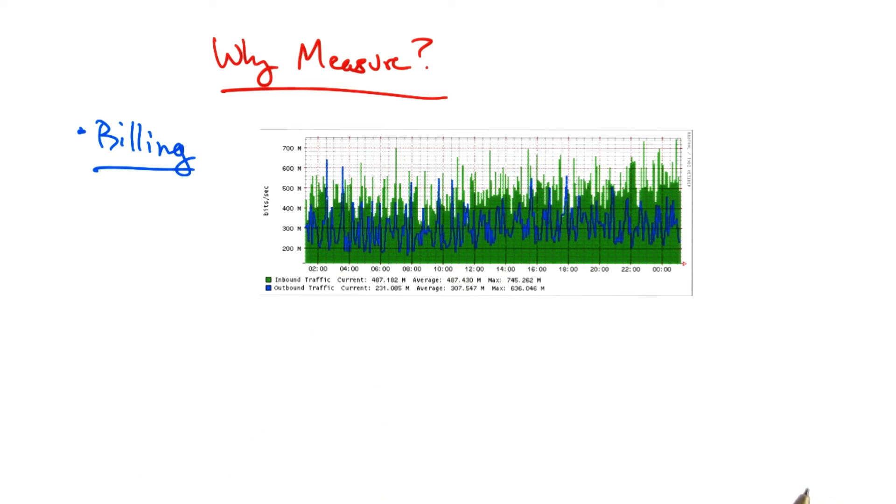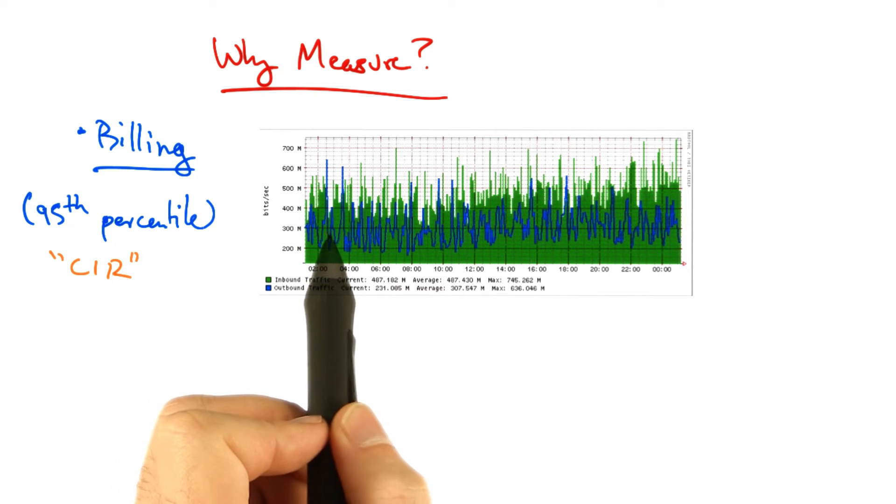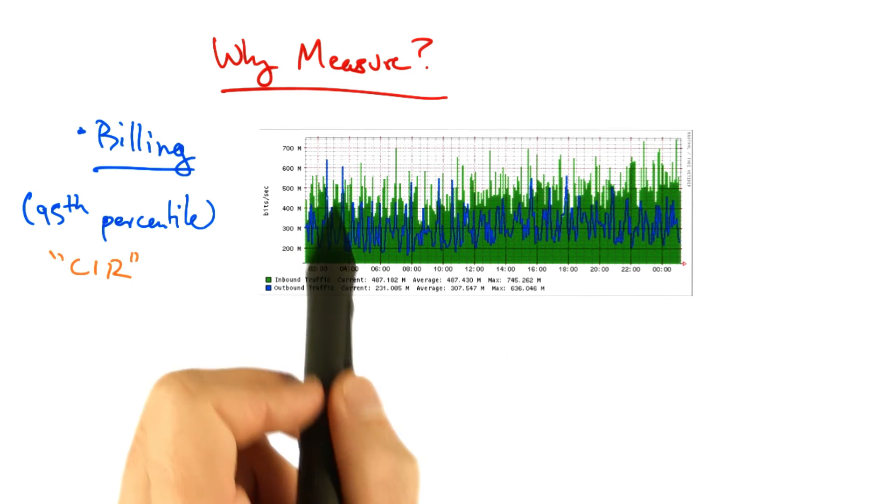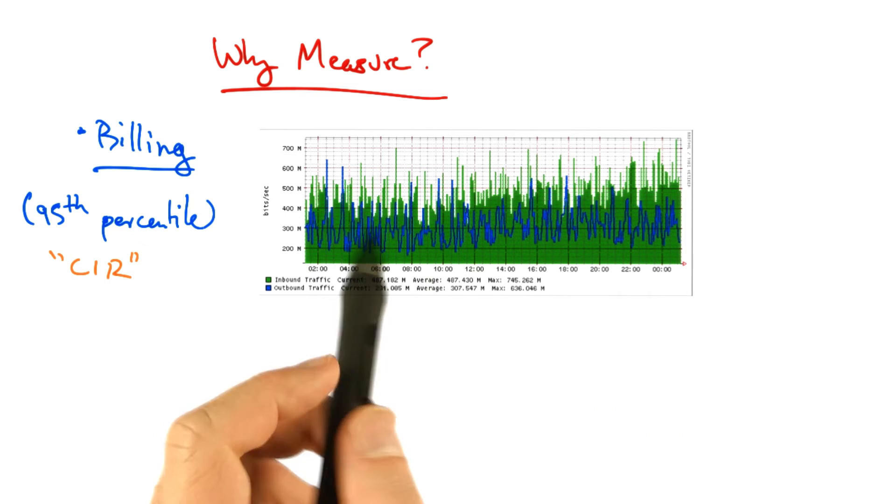Now a user might be billed based on how much traffic they send on the network. A common mode of billing is called 95th percentile billing, where a customer pays for what's called a committed information rate, or CIR, and throughput is measured every five minutes.